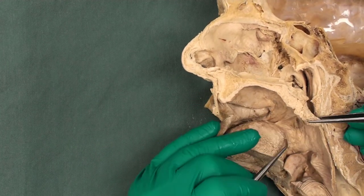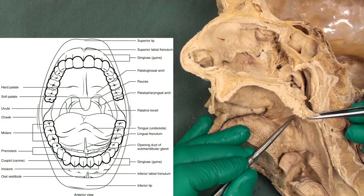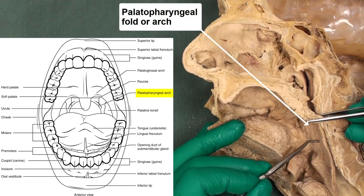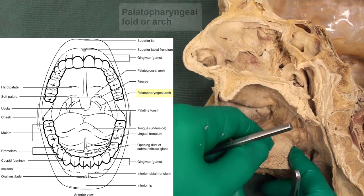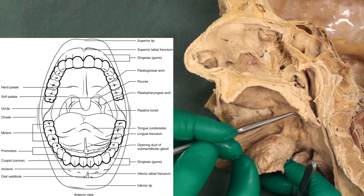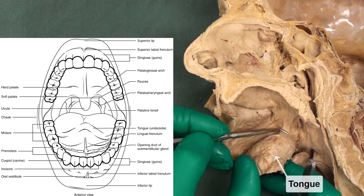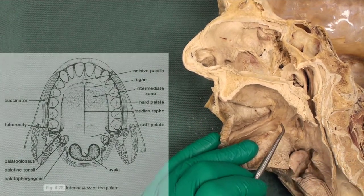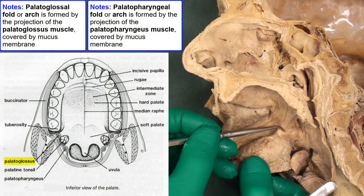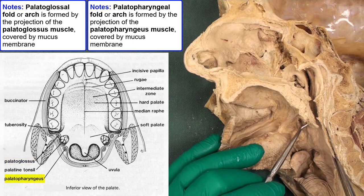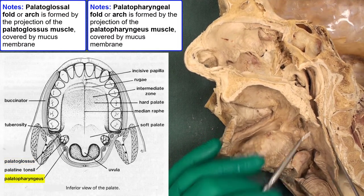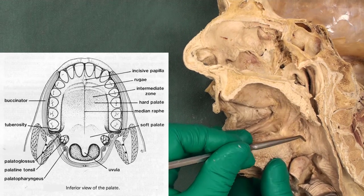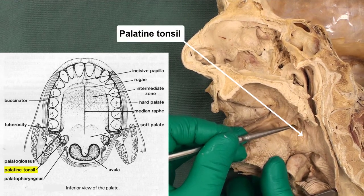We have a mucosal fold stretched between the soft palate and the wall of the pharynx — that is called the palatopharyngeal fold. Anteriorly, we have a fold stretched between the soft palate and the tongue — this is called the palatoglossal fold. Within these folds we have muscles: the palatoglossus muscle in the palatoglossal fold and the palatopharyngeus muscle in the palatopharyngeal fold. Between these two folds, we have a fossa known as the palatine fossa, and this is the palatine tonsil located within it.